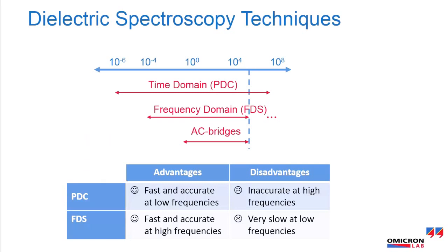There are advantages and disadvantages of these two dielectric techniques. The PDC measurement method is fast and accurate at low frequencies but inaccurate at high frequencies. The FDS measurement method is fast and accurate at high frequencies but very slow at low frequencies.